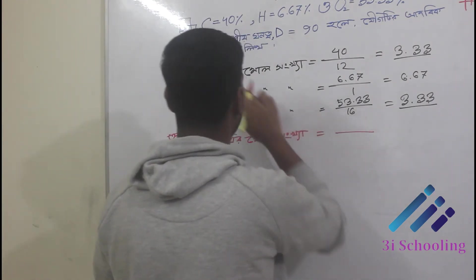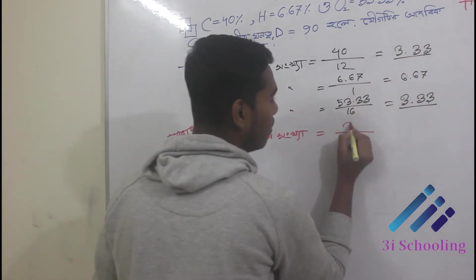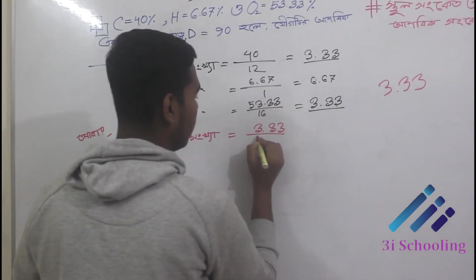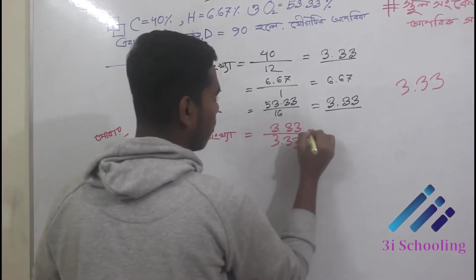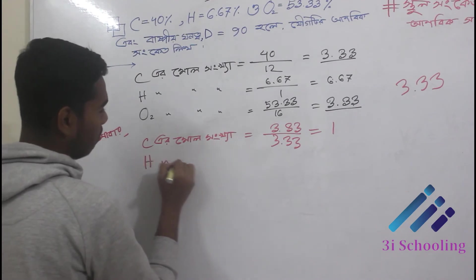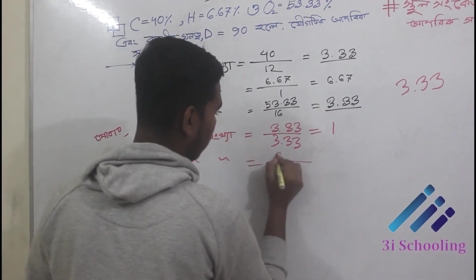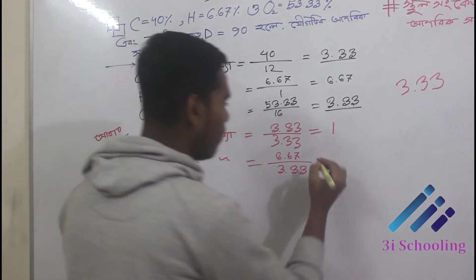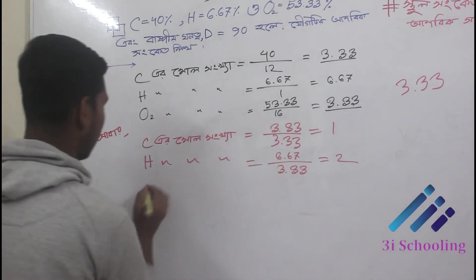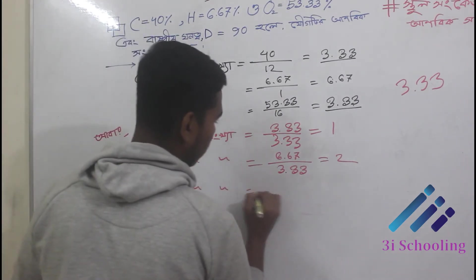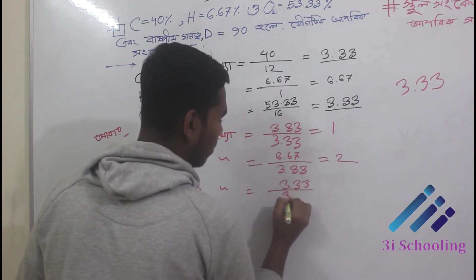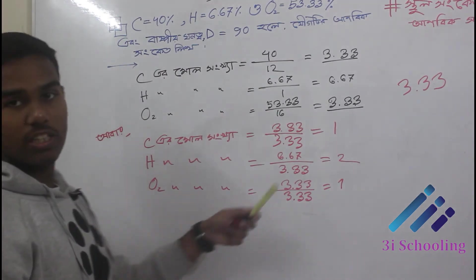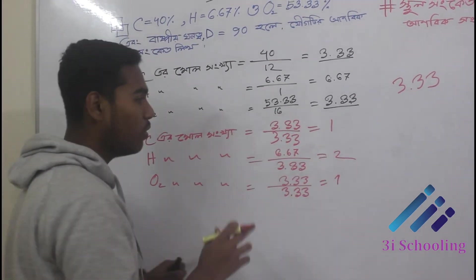Carbon is 3.33. Hydrogen: 6.67, which gives 3.33 times 2. Oxygen is 3.33. So the results are: carbon 3.33, hydrogen 6.67, oxygen 3.33.